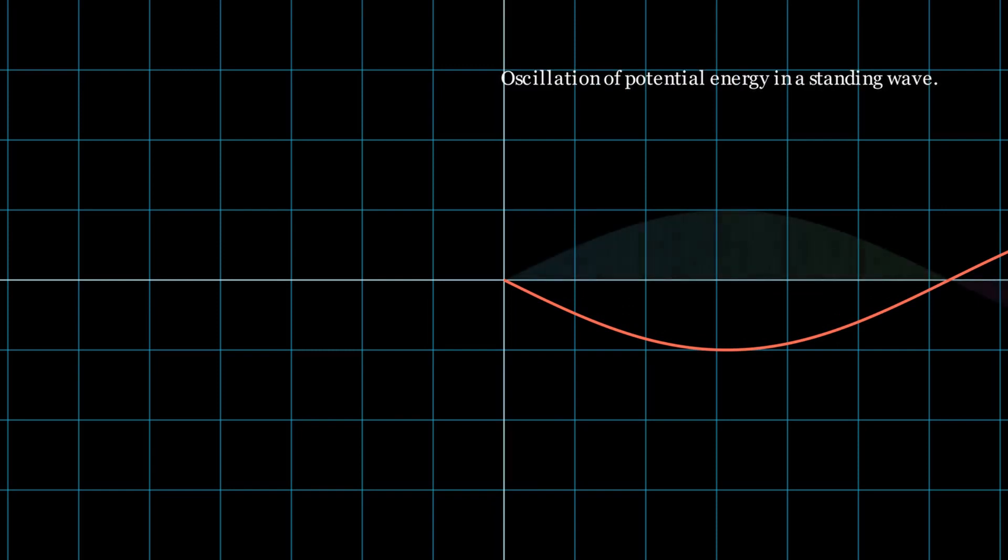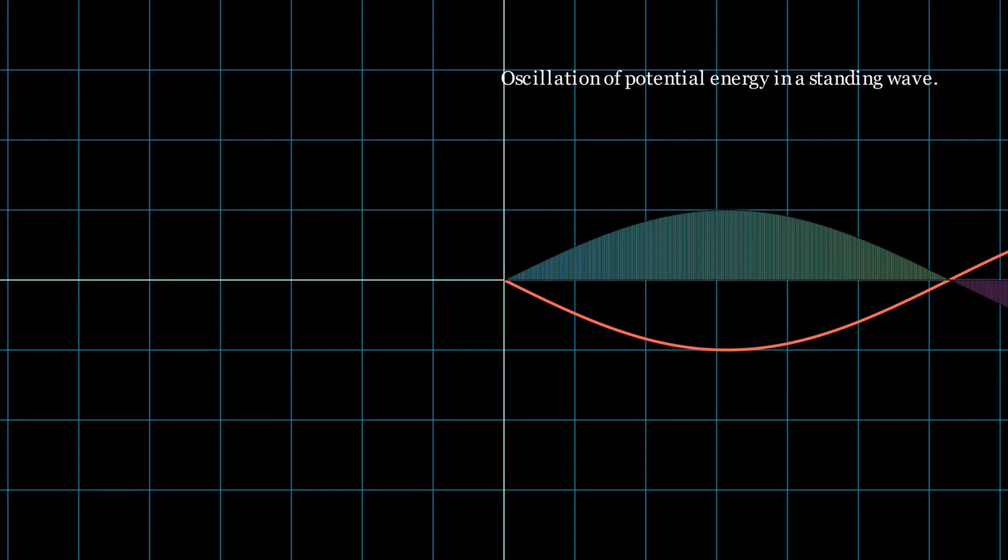The total energy in a standing wave merely oscillates as potential energy or remains constant transversely. A standing wave cannot have any longitudinal movement of energy. However, the total energy is a function of the amplitude squared in both cases.